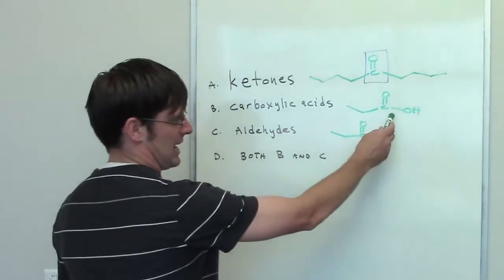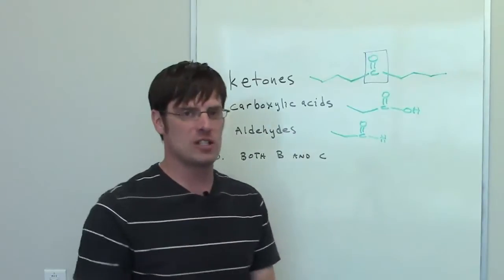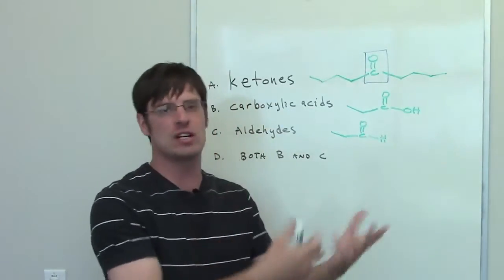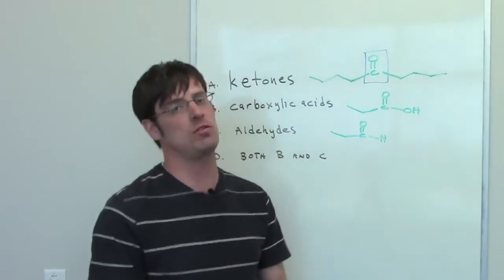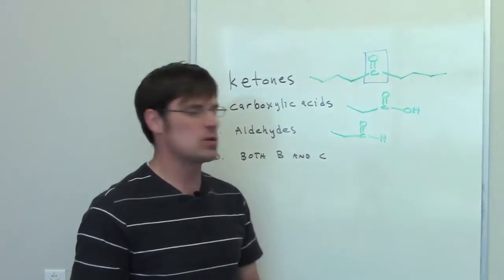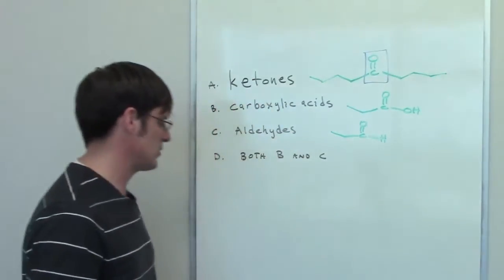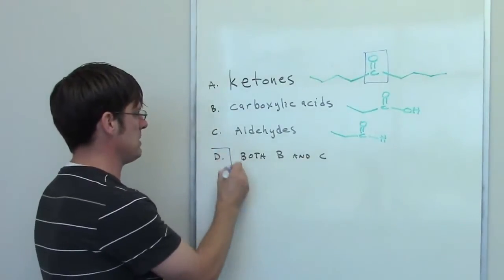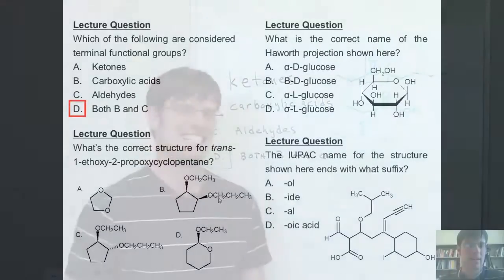What about a carboxylic acid? By virtue of the way a carboxylic acid is, it's going to have to occur at the end of a carbon chain. It is a terminal functional group. The same thing occurs with an aldehyde. Thus, the correct answer for this problem is both B and C. In the second question,